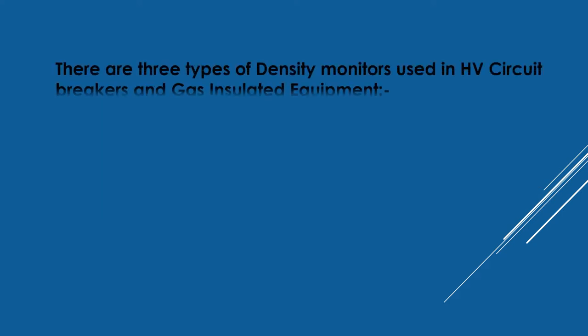There are three types of SF6 gas monitors used in circuit breakers and GIS systems. The three types of sensors are: analog, hybrid, and digital.